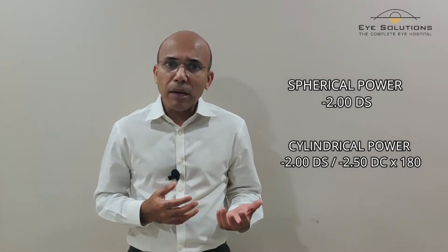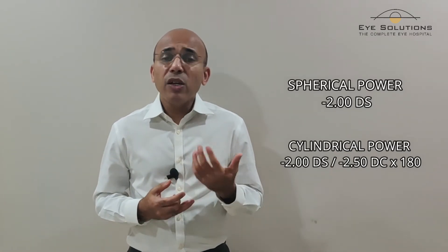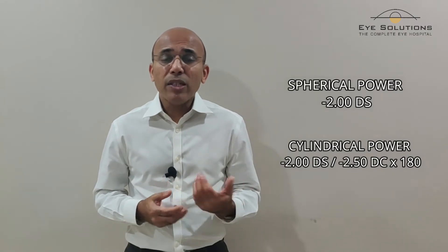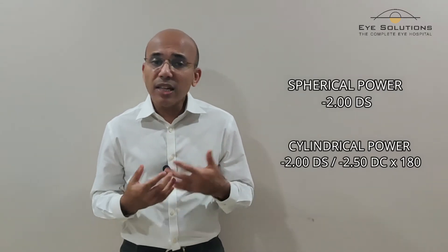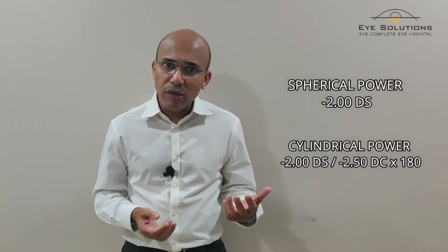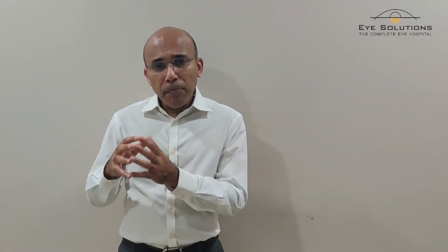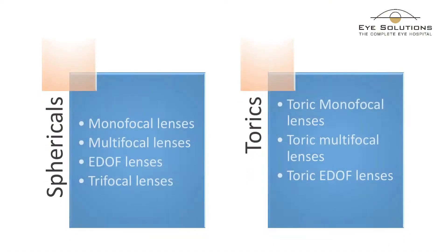The other type of lens power is a spherical power along with a cylindrical power. DC here stands for diopter cylinder, which is a measurement for the cylindrical power of a lens. People who have only a spherical power need one set of lenses, and those who have a spherical as well as a cylindrical power need another set of lenses.